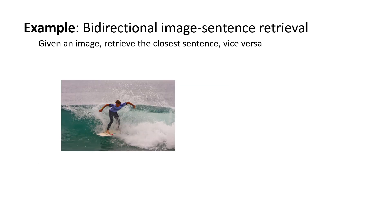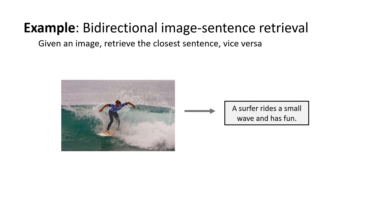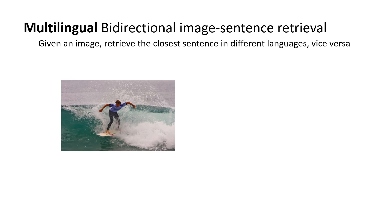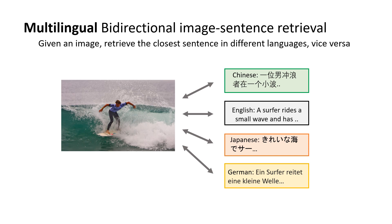In this talk I want to focus on a different task called bi-directional image sentence retrieval. Here, given an image our goal is to retrieve the closest sentence caption, and vice versa, given a sentence our goal is to retrieve the closest image from a database. In particular, I'd like to talk about multilingual bi-directional retrieval, where the goal is given an image, match it to a description in multiple languages — here showing examples in Chinese, English, Japanese and German.